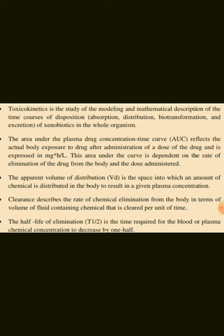Toxicokinetics is the study of the modeling and mathematical description of the time course of disposition of chemical xenobiotics in the whole organism. The area under the plasma concentration versus time curve reflects the actual body exposure to a drug after administration of a dose, expressed in milligram × hour per liter. This AUC is dependent on the rate of elimination of the drug and the dose administered. The apparent volume of distribution is the space into which an amount of chemical is distributed in the body to result in a given plasma concentration. Clearance describes the rate of chemical elimination in terms of volume of fluid containing chemical cleared per unit time. The half-life of elimination is the time required for the blood or plasma chemical concentration to decrease by one half.